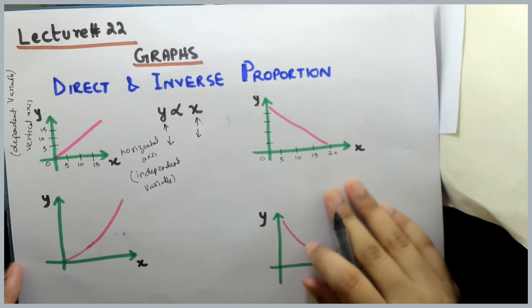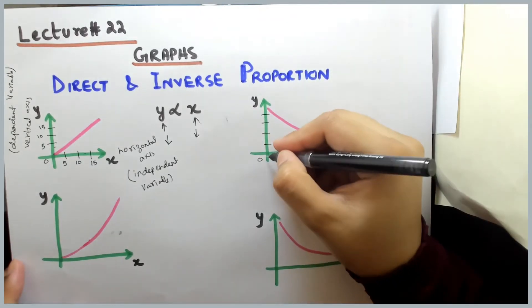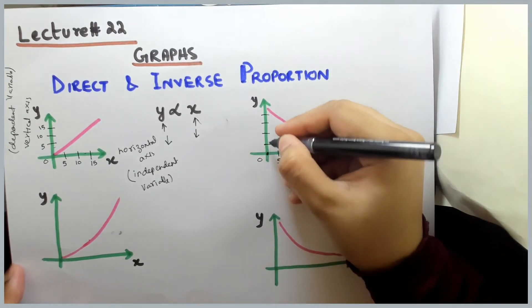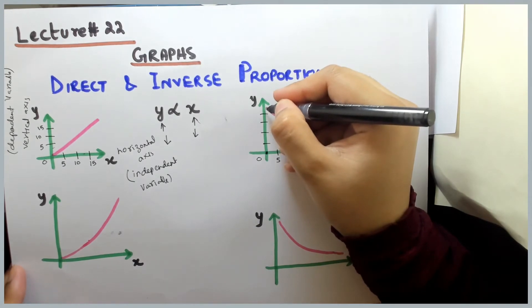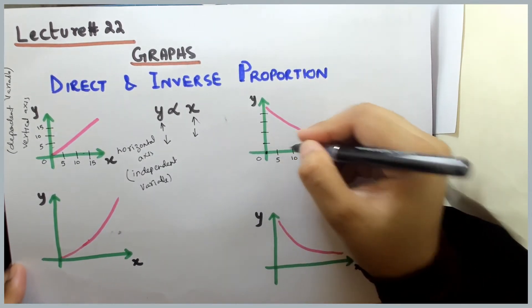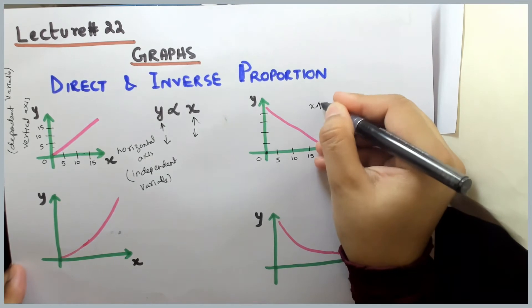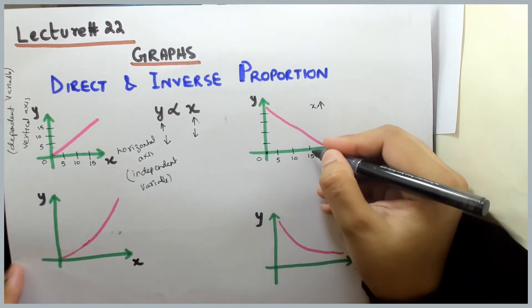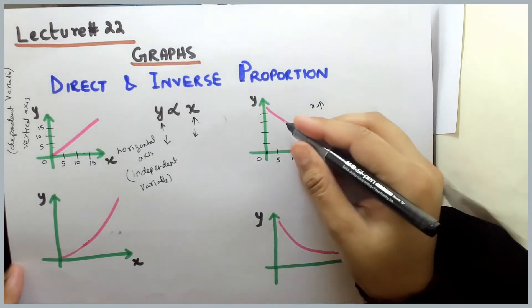Now we will talk about our other graph. Here, if you look at x's value, when x's value was 0, y was in its max, it was the highest. As x is increased, as x is increased, for example 15, then y's value is decreased.